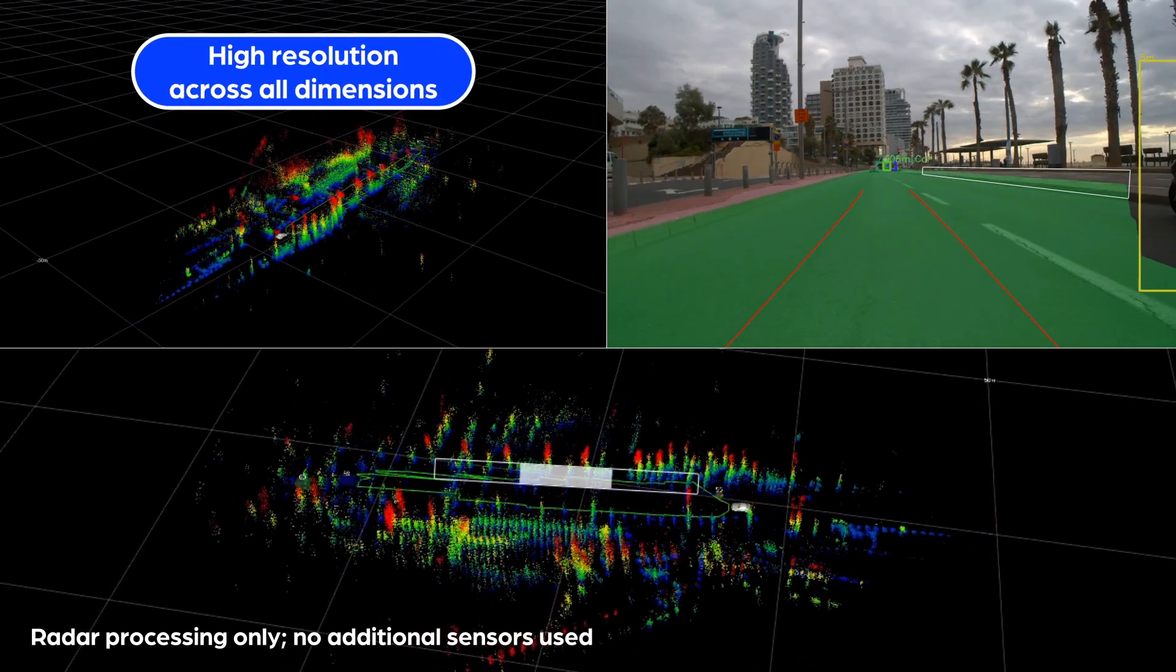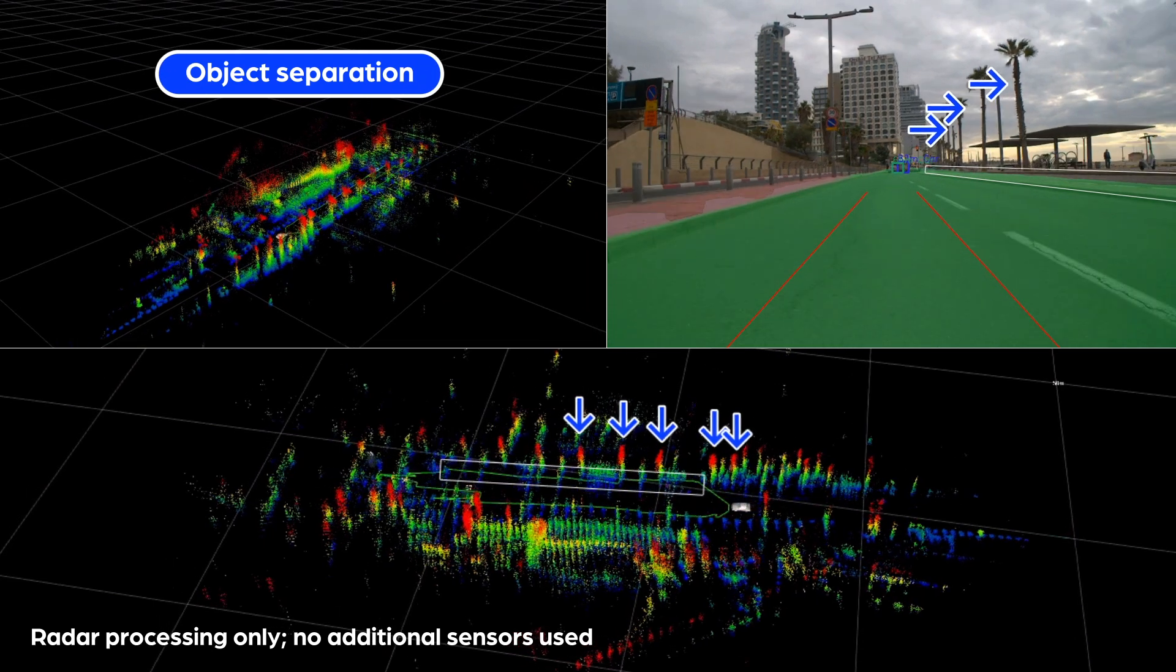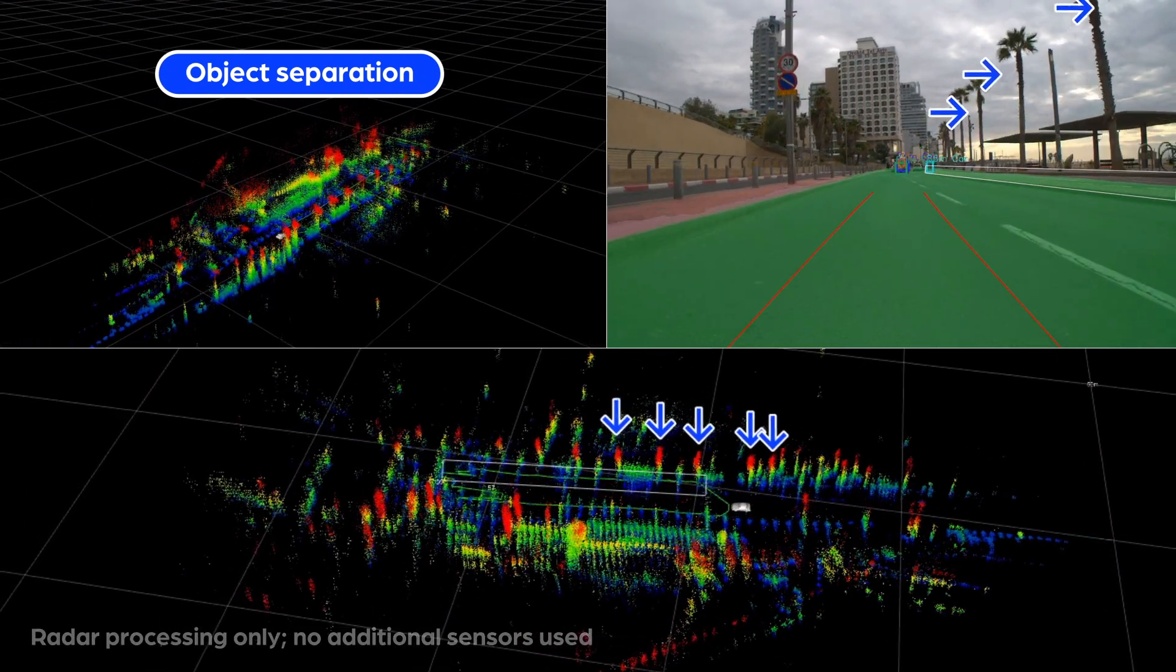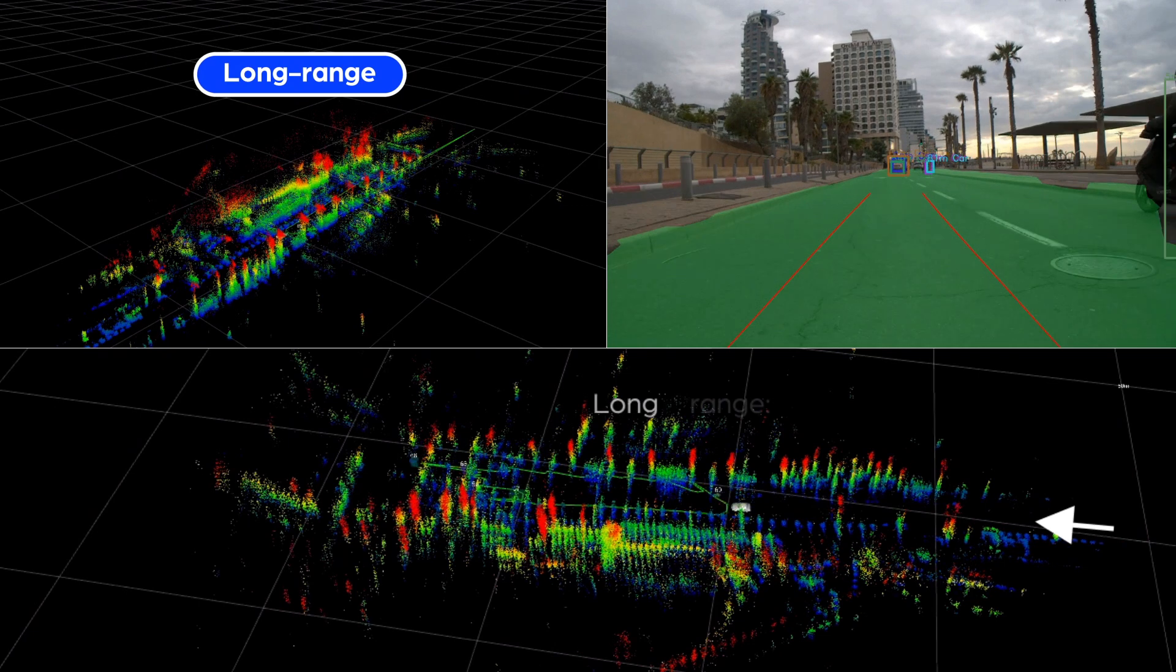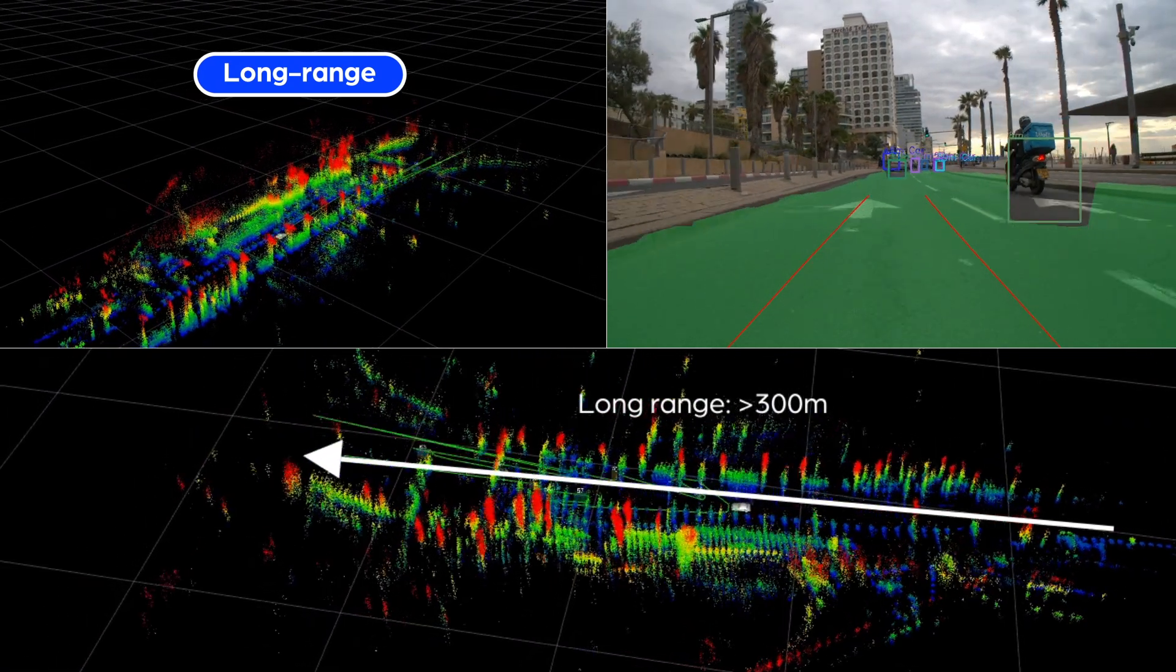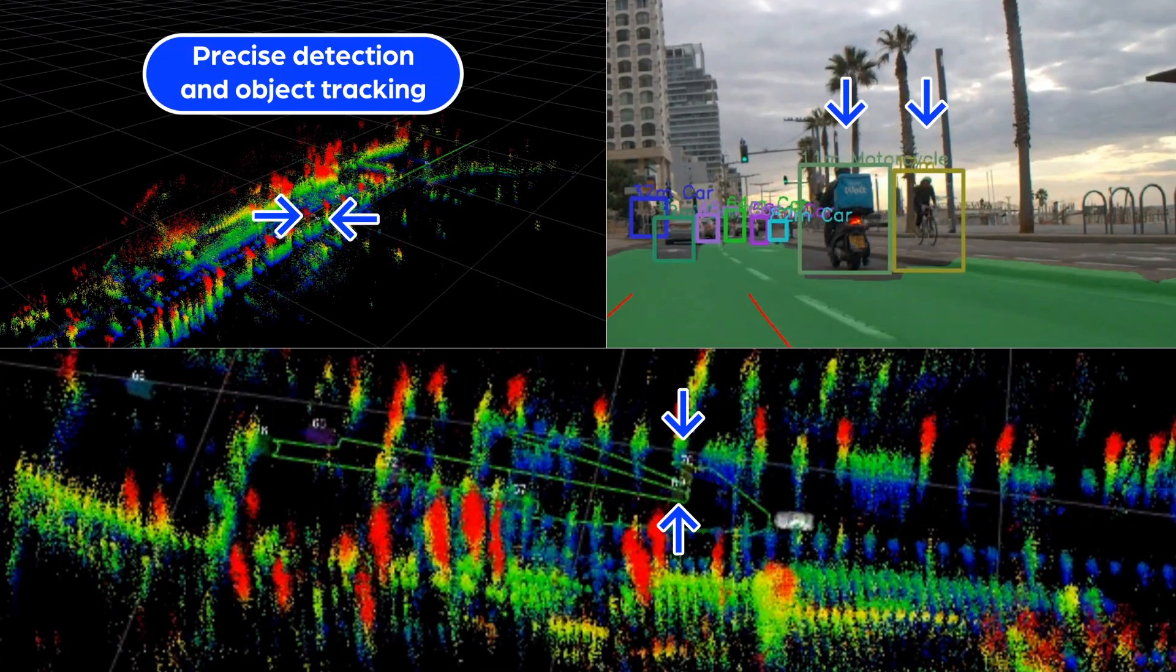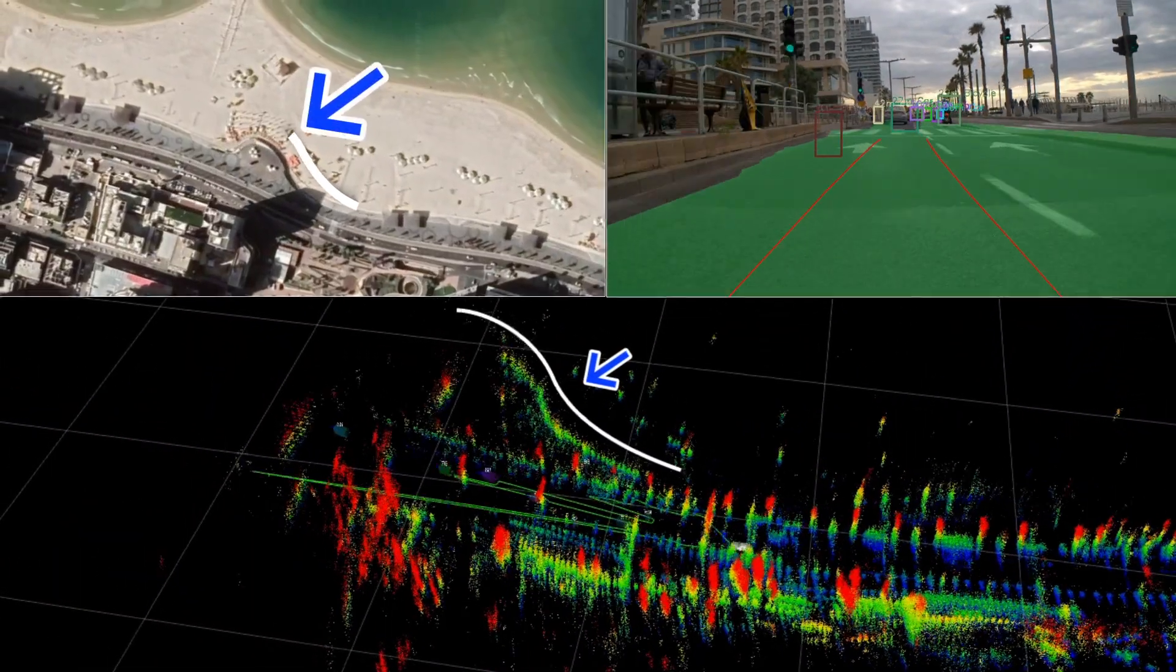With high resolution across all dimensions, best-in-class object separability, and long-range detection, the Phoenix radar enables precise detection and object tracking, even in the most challenging conditions and demanding environments.